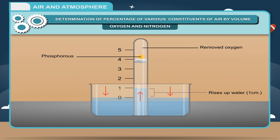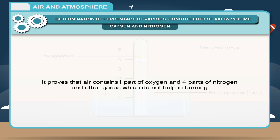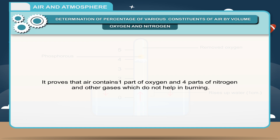Since air contains approximately 20% oxygen by volume, the water level rises by one centimeter out of five centimeters. This proves that air contains one part of oxygen and four parts of nitrogen and other gases, which do not help in burning.